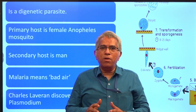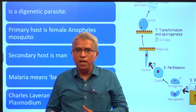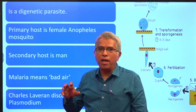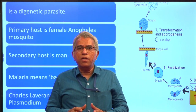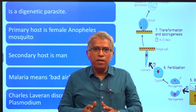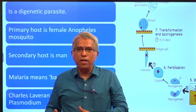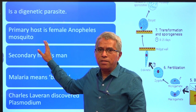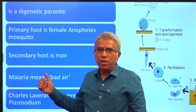The primary host is the host in which the sexual life cycle of the organism occurs. In the case of Plasmodium, the primary host is the female Anopheles mosquito. The secondary host is the host in which the asexual reproduction of the parasite occurs, which is the human being. So Plasmodium is a digenetic parasite that completes its life cycle in mosquito and human being.